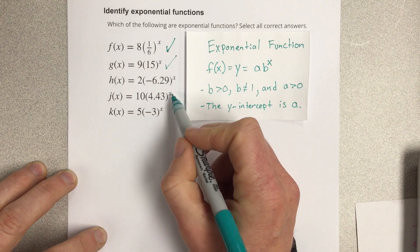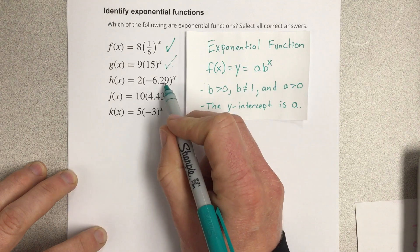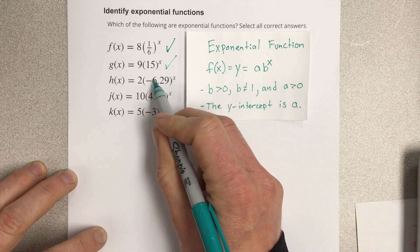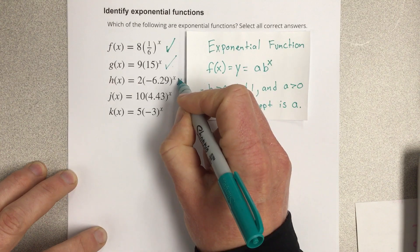All these have variables in the exponent, so they're all potential exponentials, but this one has a negative for the b value. b has to be greater than zero, so this is not an exponential equation.